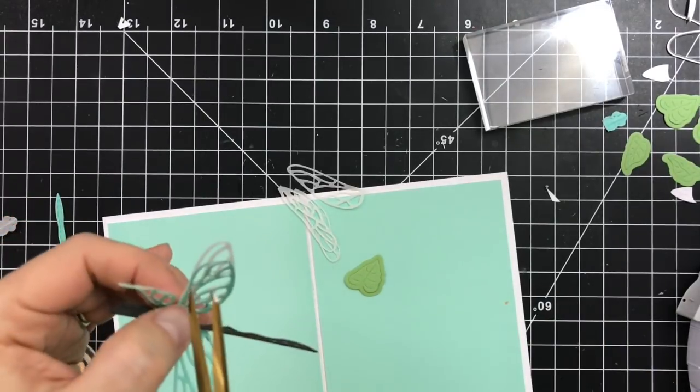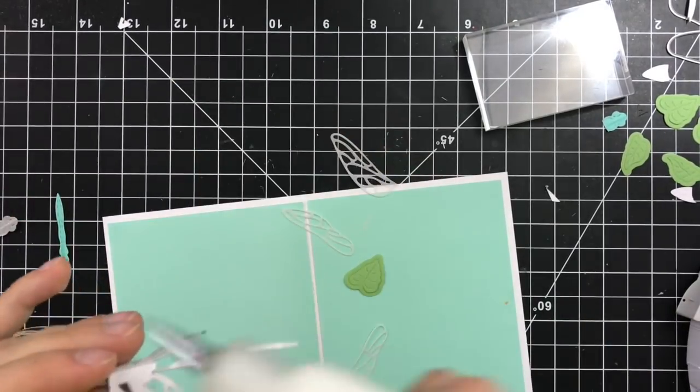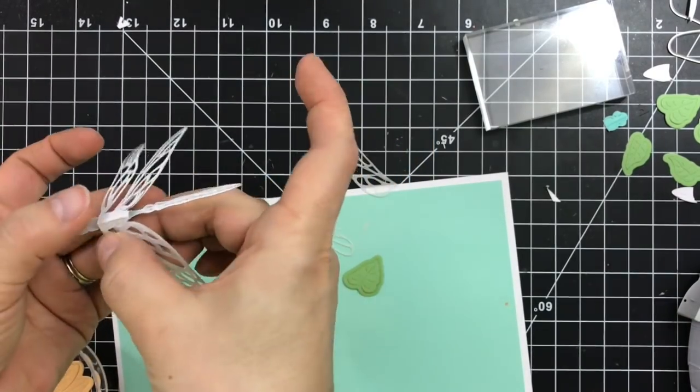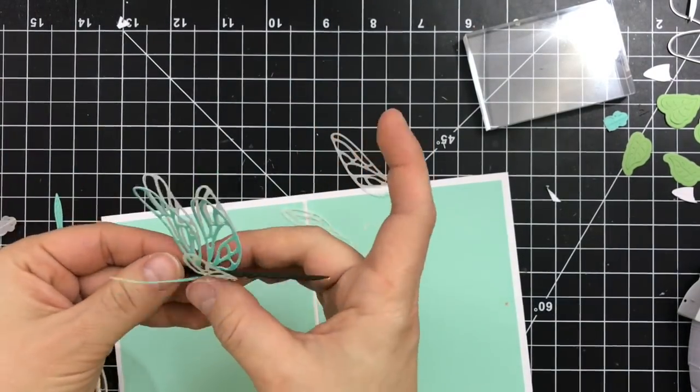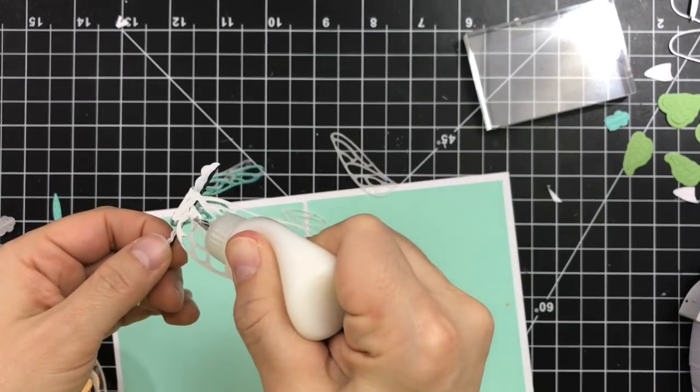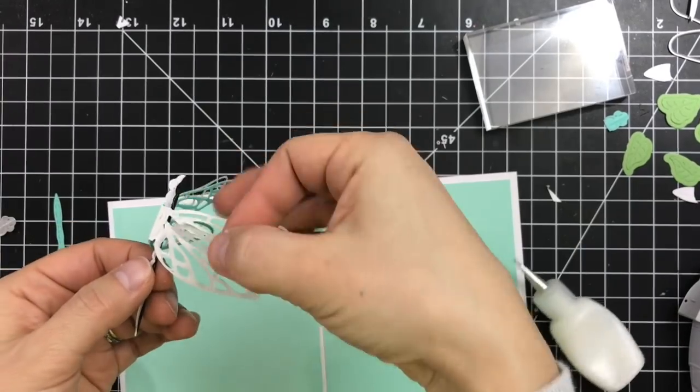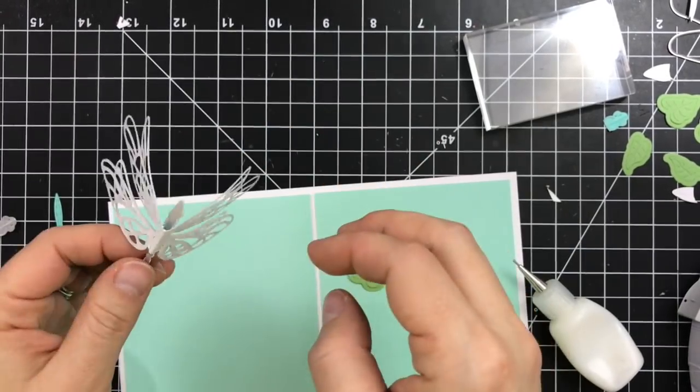Next I'm adhering the wings cut from the vellum. I'm adhering it on the base of the pool wings. So that way it doesn't interfere with that pop-up mechanism that we already created. I'm just securing those in place and I'll let it aside to dry.